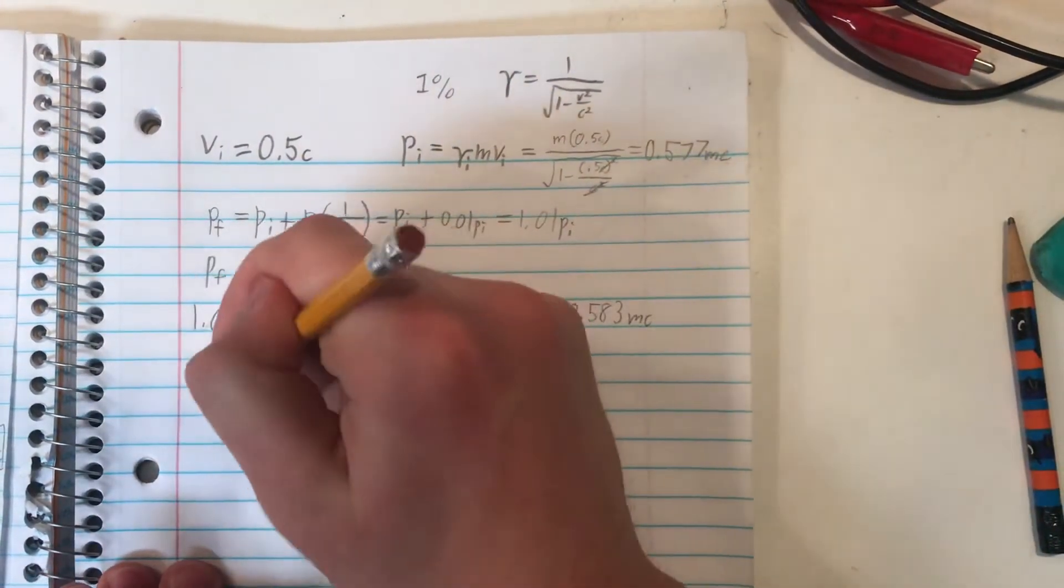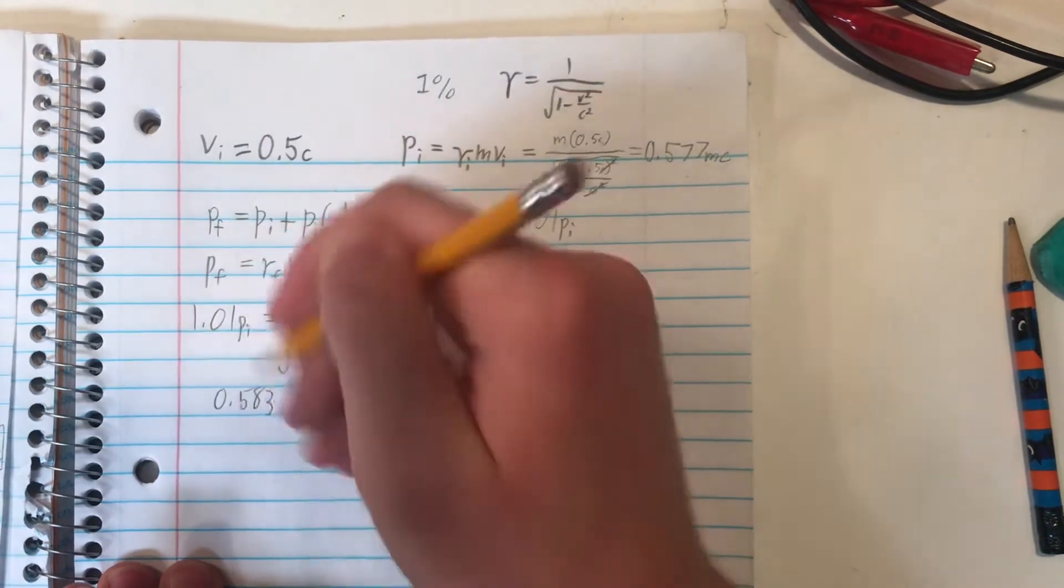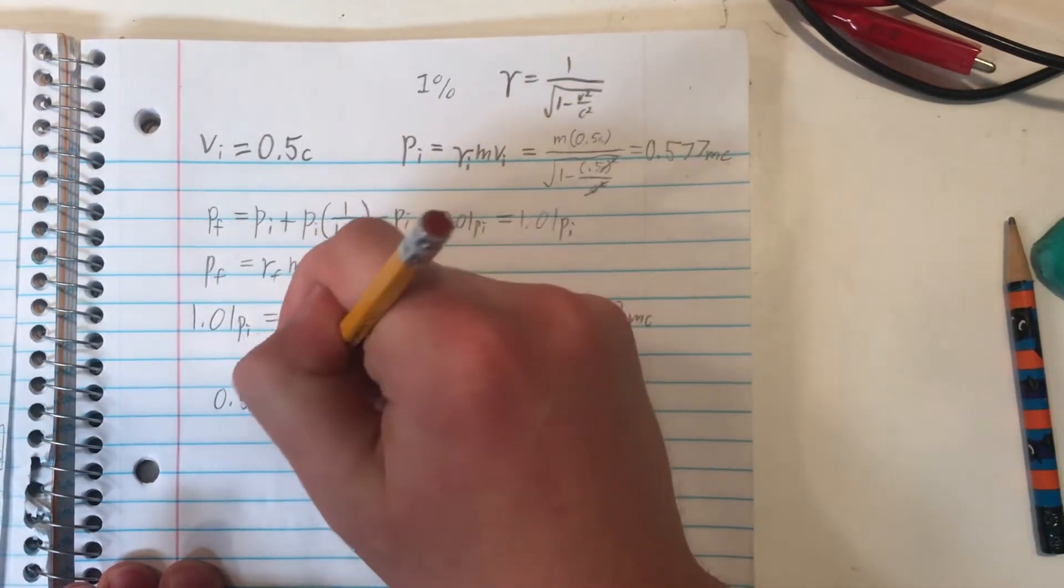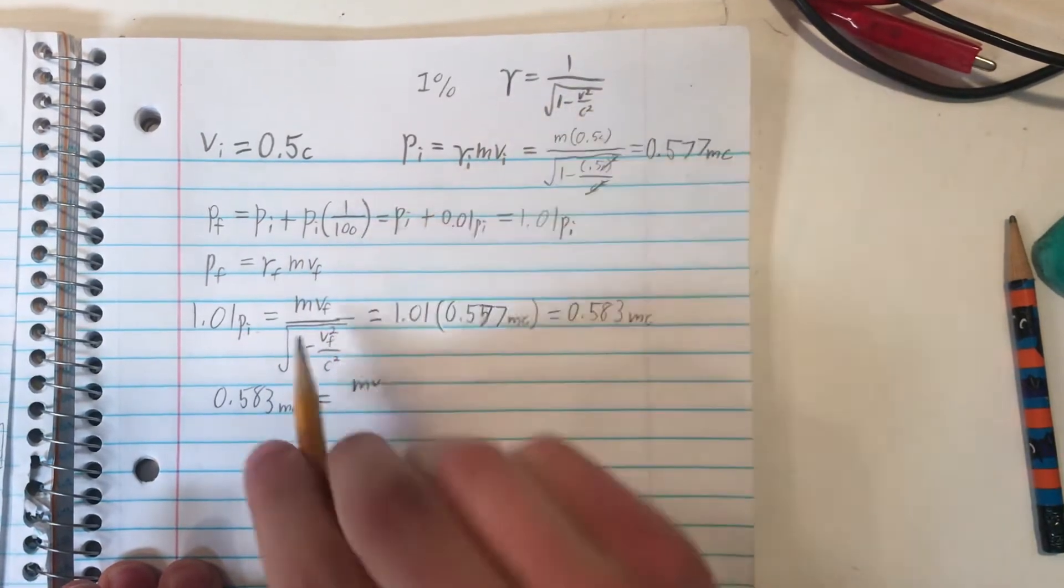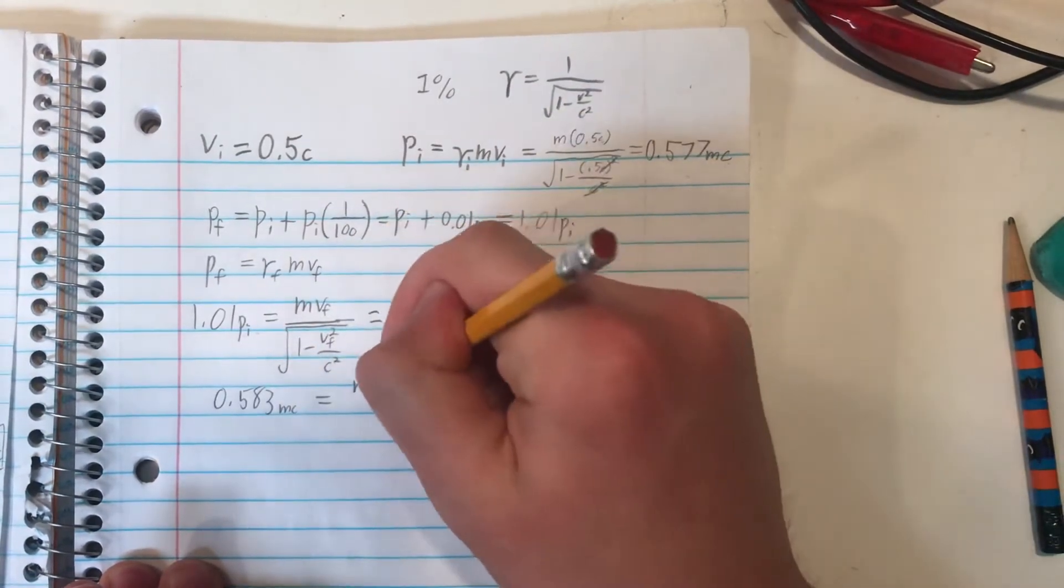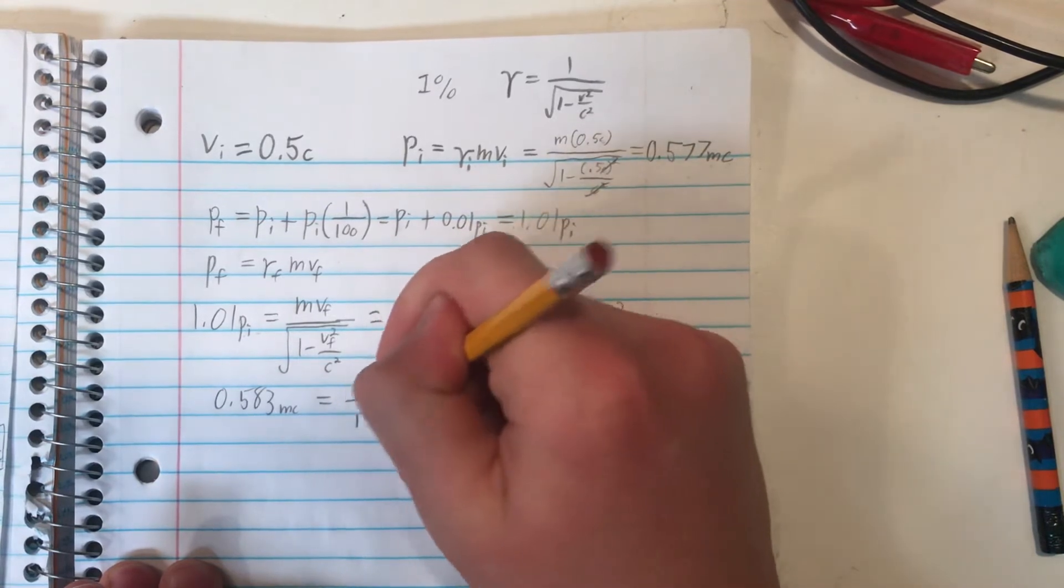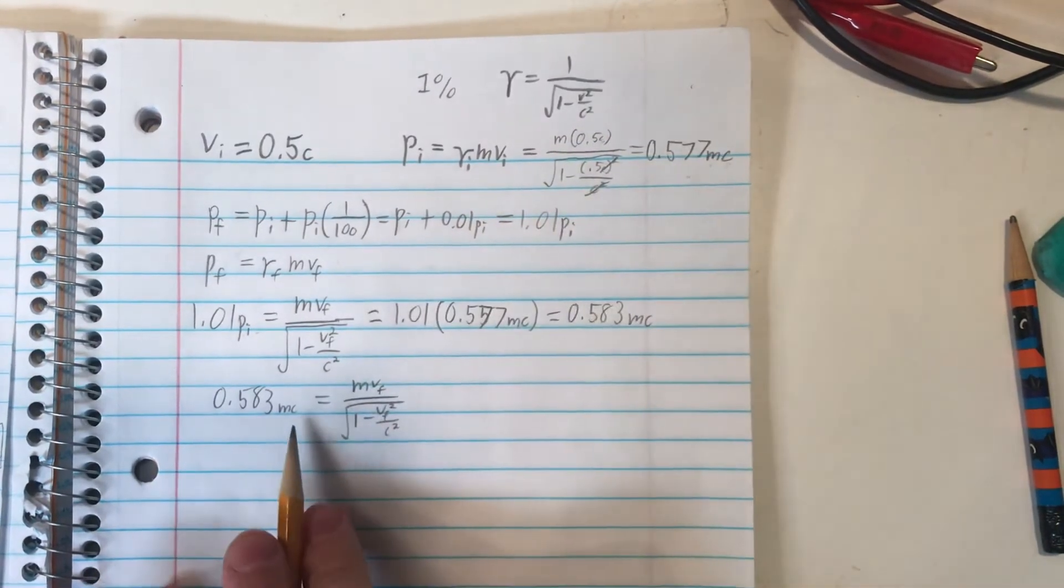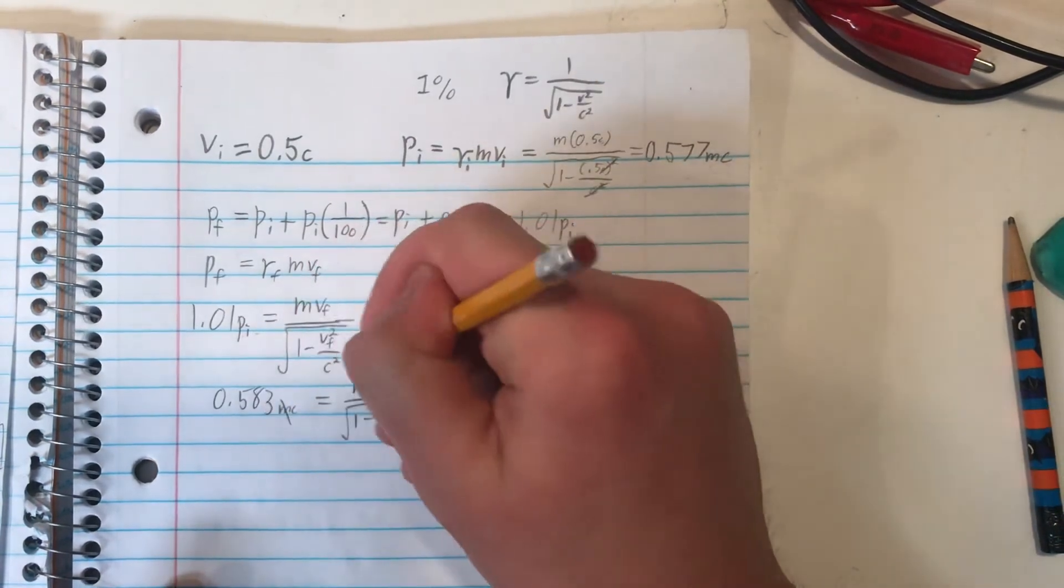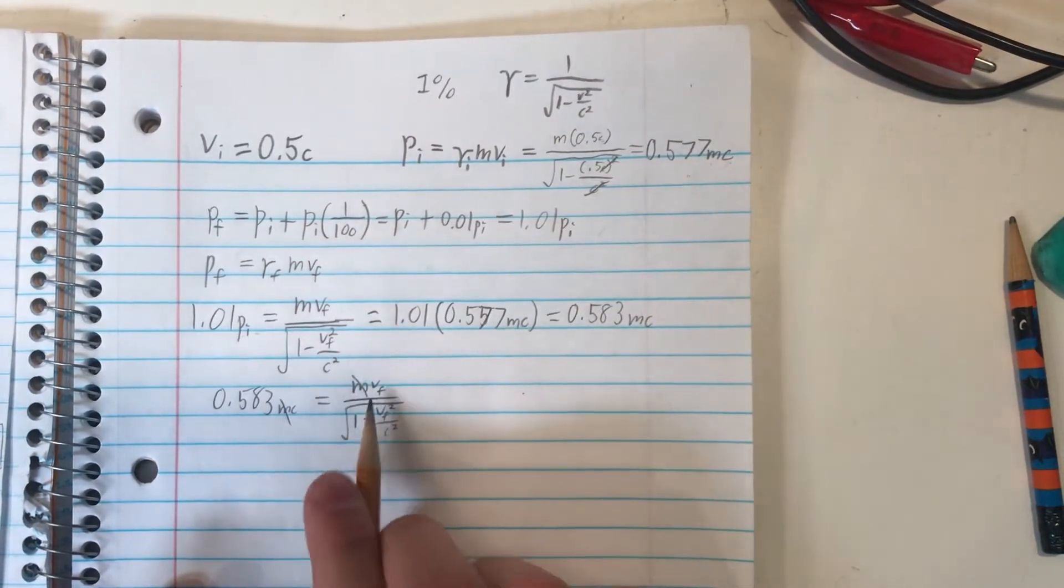So what we now know is that 0.583 mc is equal to our final momentum here, mvf divided by, and then the same stuff we've been writing several times now. Except we can simplify it a bit.